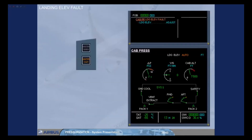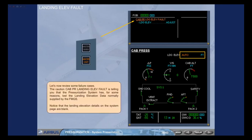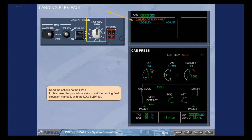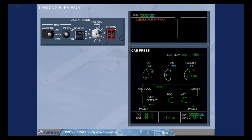Let us now review some failure cases. The caution CAB PRESS LANDING ELEVATION FAULT is telling you that the pressurization system has, for some reason, lost landing elevation data normally supplied by the FMGS. Notice that the landing elevation details on the system page are blank. The procedure asks to set the landing field elevation manually with the landing elevation selector. As soon as the selector is moved from the auto position, the action line on the engine warning display clears and a MAN message appears on the CAB PRESS page. The landing elevation value will also indicate the selected value.